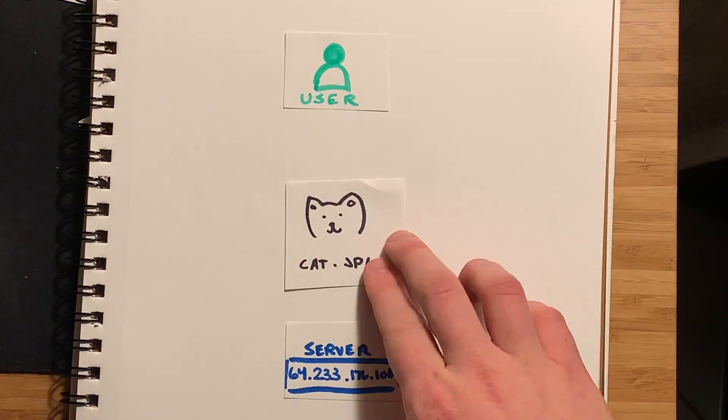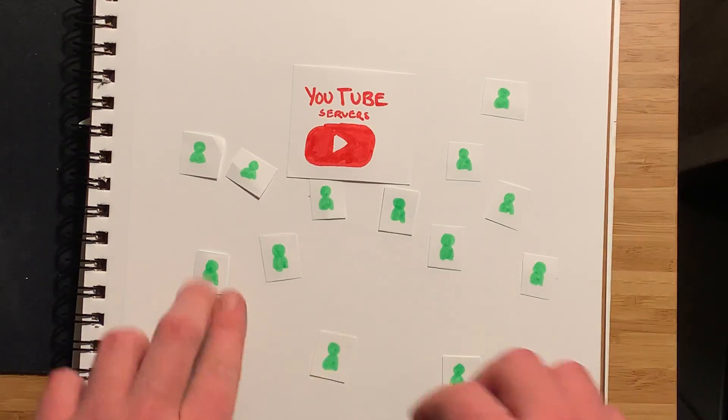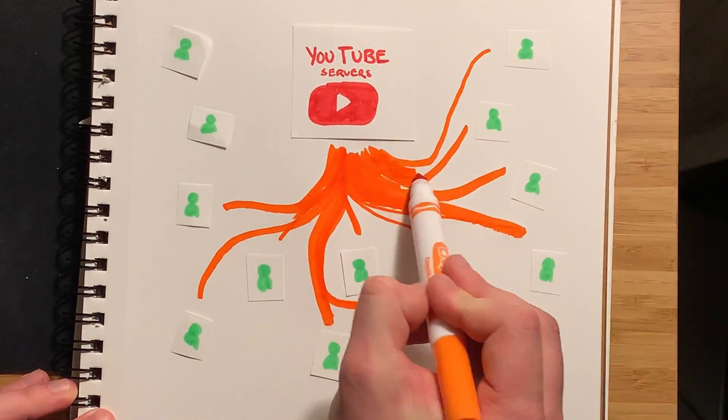With location-based addressing, the user is trusting whatever is at that server to be the content they want. One issue is that nothing really stops the content from changing without the user knowing. Another issue at scale is that when there is only one source of content, it creates bottlenecks and centralized data pipes — imagine YouTube servers being the one place where all YouTube video traffic must flow.